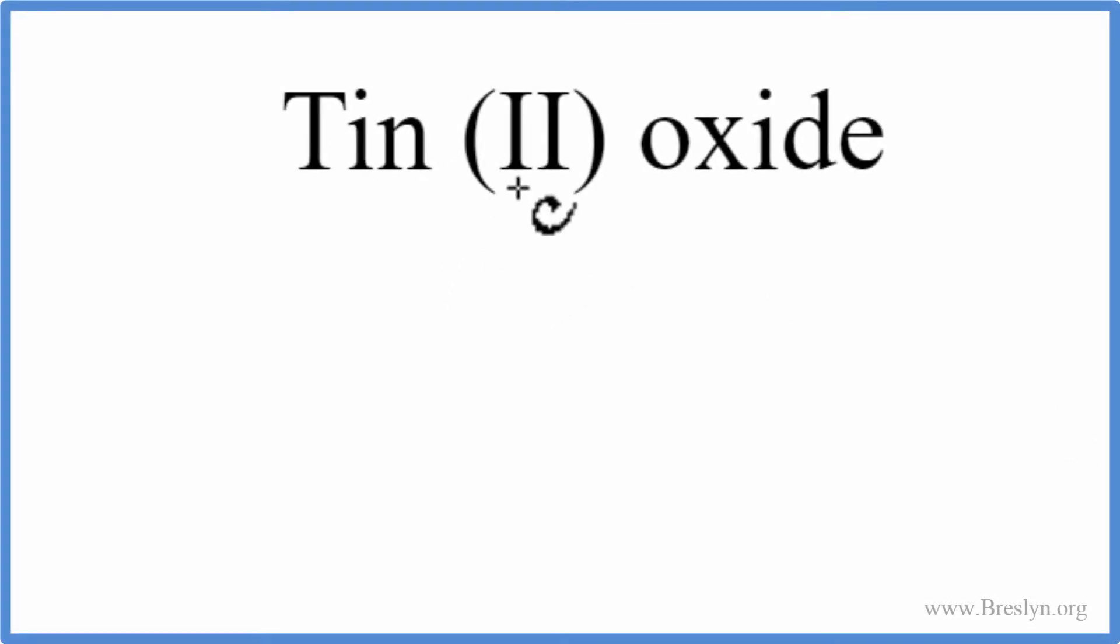To write the formula for Tin (II) oxide, we look up tin on the periodic table. The element symbol is Sn. Oxide means we're looking for oxygen, which is O.